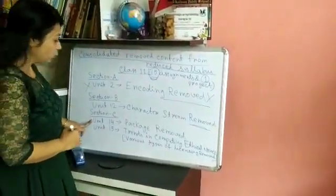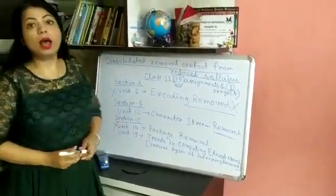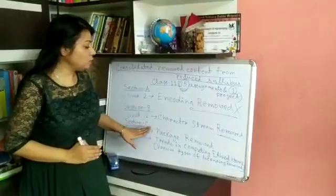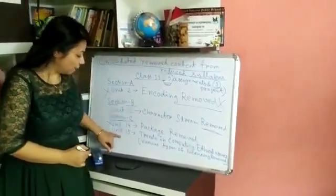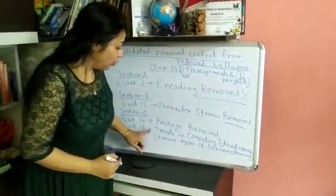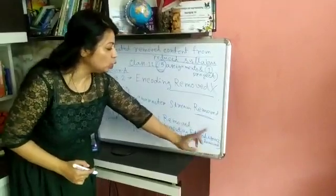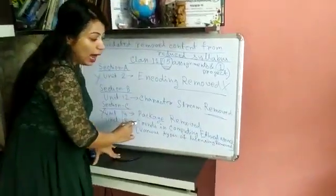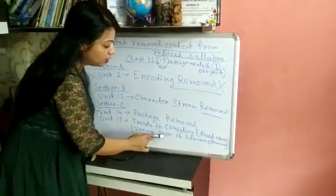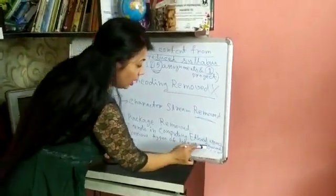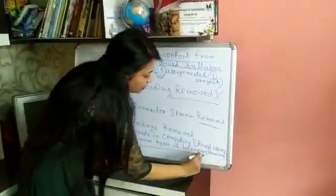Now come to section C. Unit 14 — package — the total chapter has been removed. You don't need to study the package chapter. Then the last chapter, which is chapter 15, is on trends in computing and ethical issues. You still have to learn this chapter, but only one topic has been removed: various types of licensing. Only that has been removed.